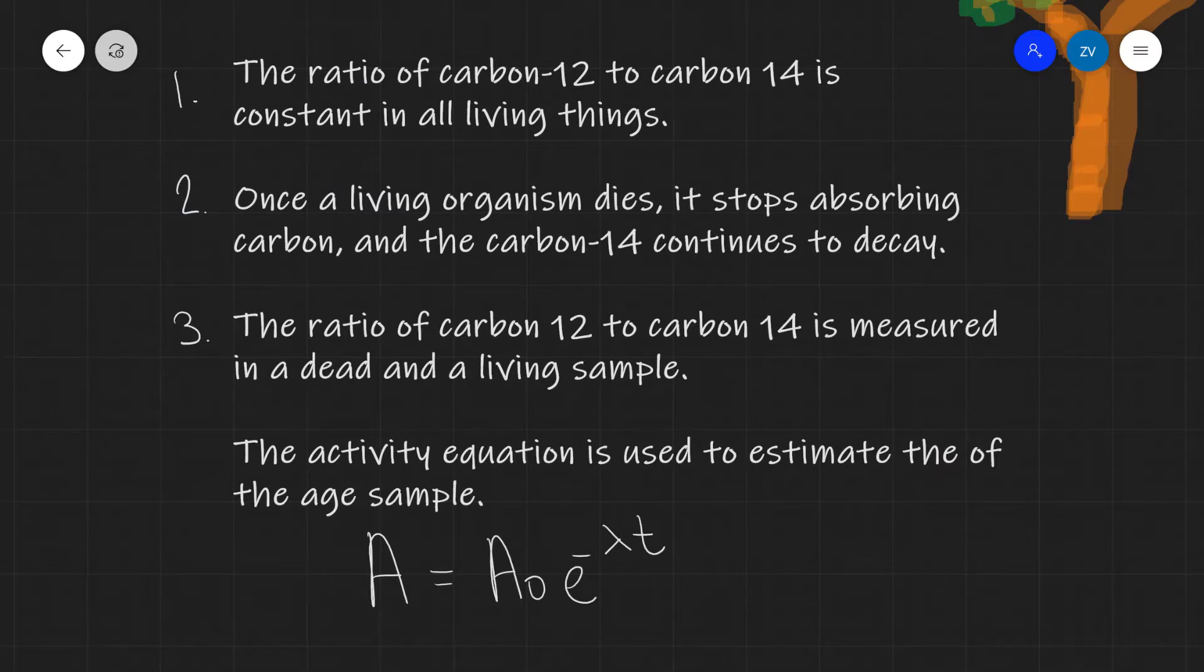The ratio of carbon-12 to carbon-14 is measured in a dead and a living sample. For instance, if you uncover a part of an ancient ocean boat made out of wood, this will be your dead sample, and a living sample might be a similar type of wood of similar size.